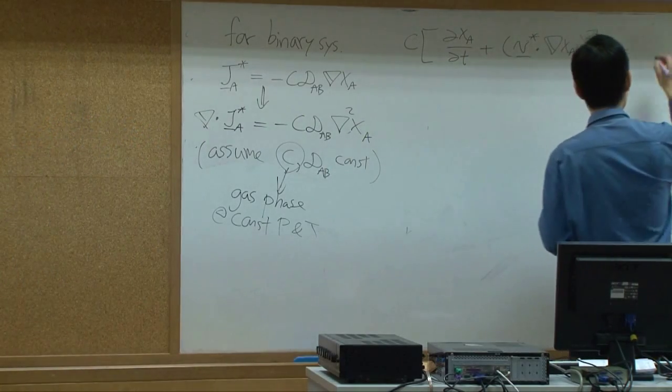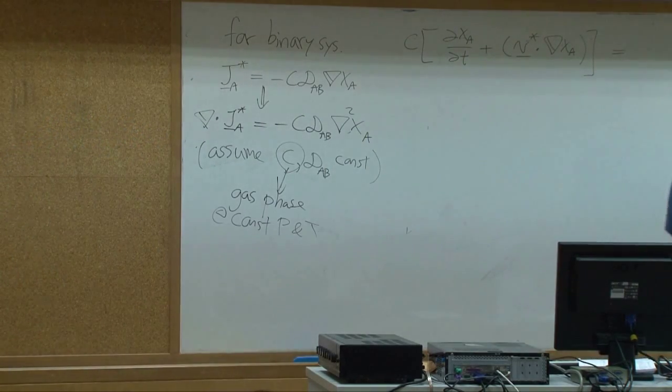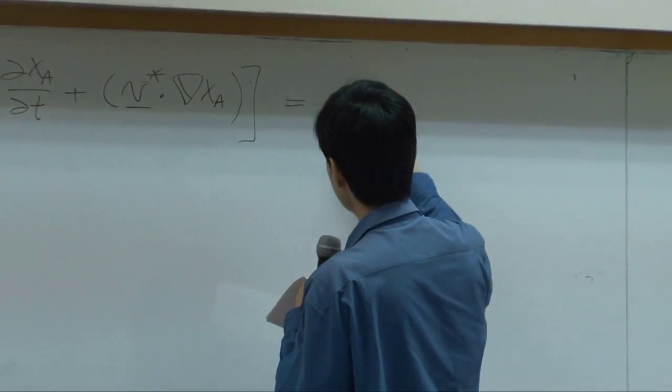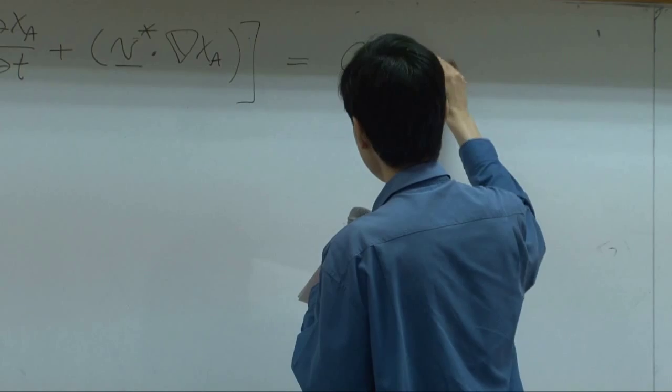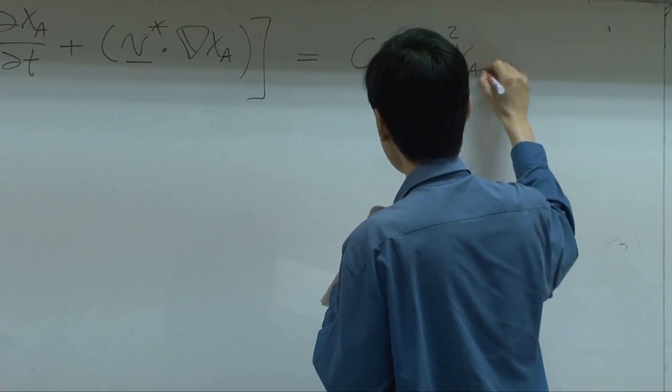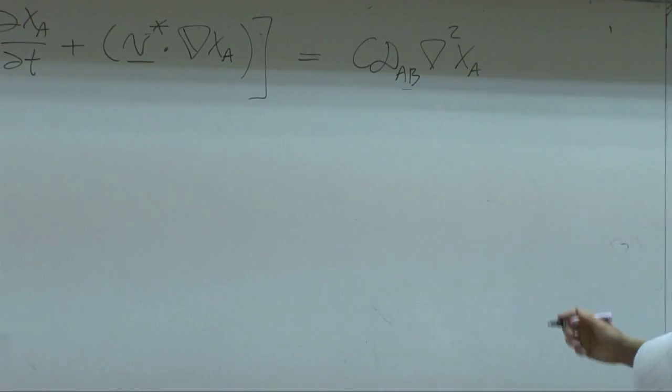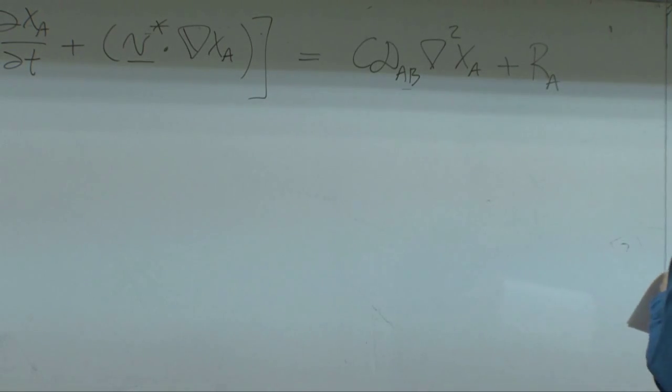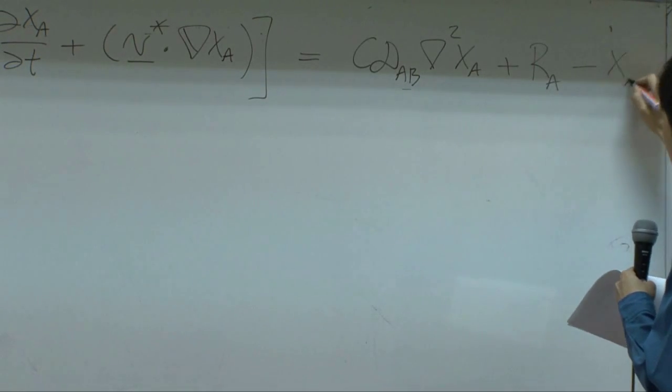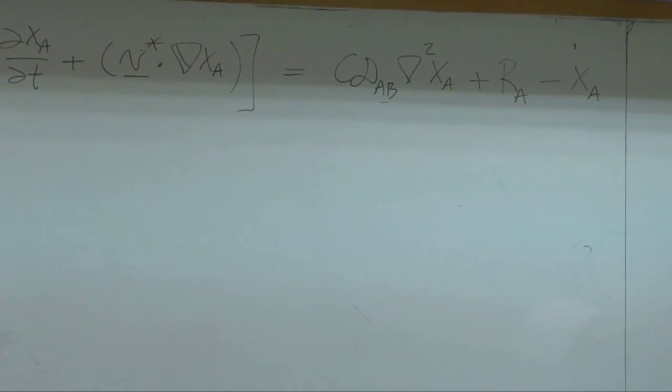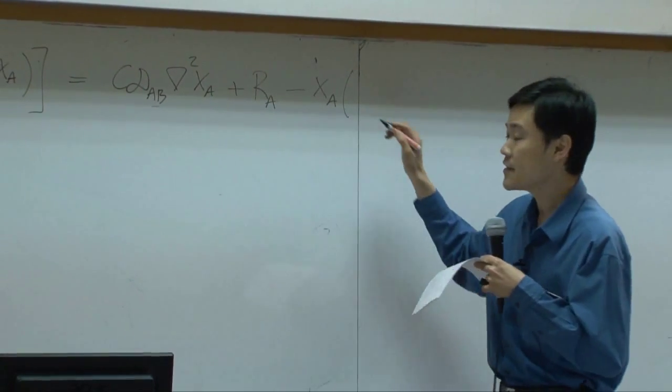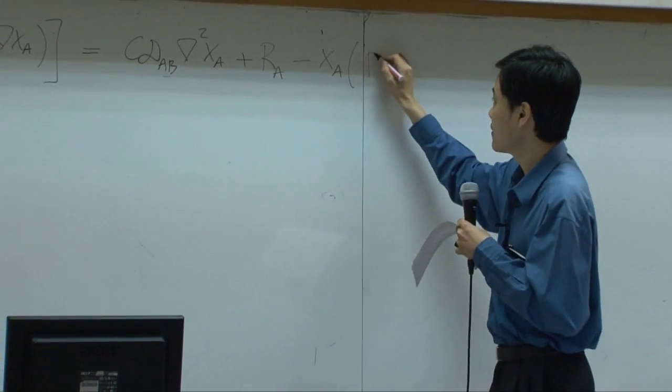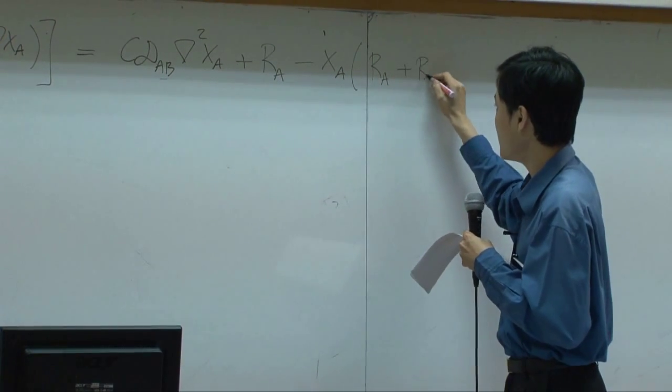Then you can write it down here. Minus sign up front of these two parts will be cancelled. So you have cdab Laplacian of xa plus ra minus xa summation of ri. In this case, since we have only two species, there will be ra plus rb.